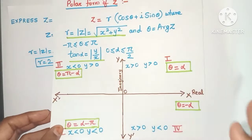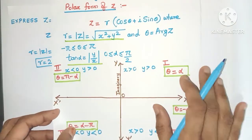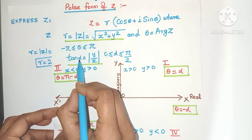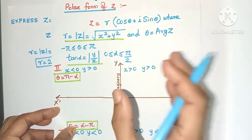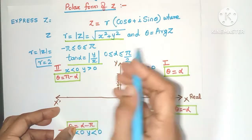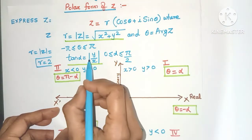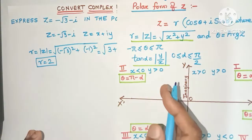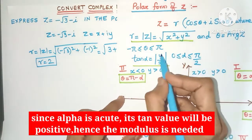Similarly let's find out the theta value or the argument of z. Now for that we first need to find out this alpha angle. Now what is this alpha? It is nothing but any acute angle from 0 to π/2, and it is defined as modulus of y/x. Modulus means the positive value of y/x.